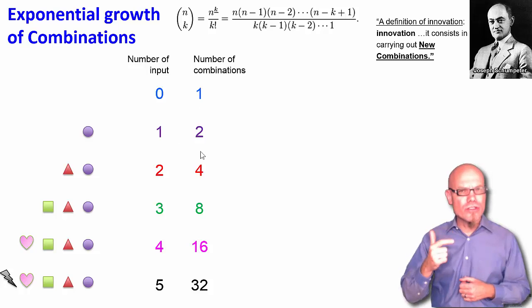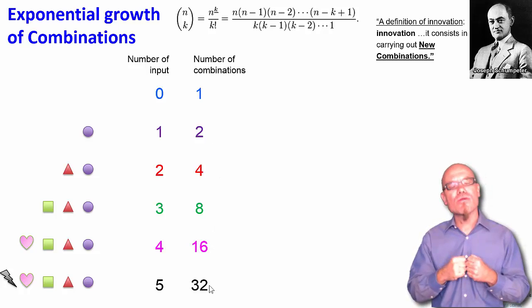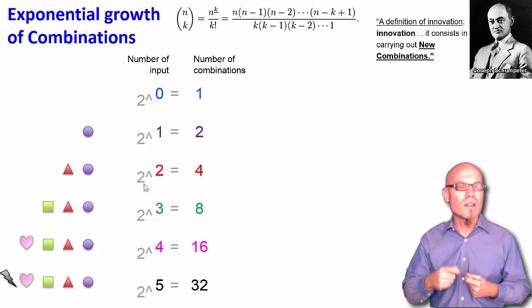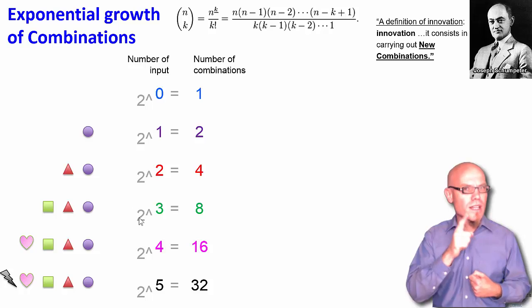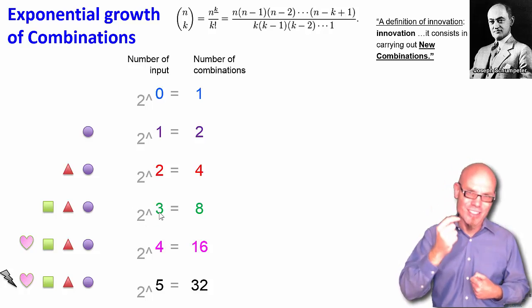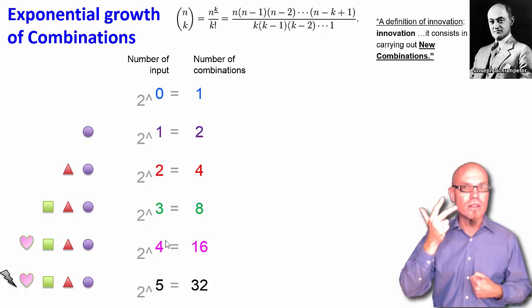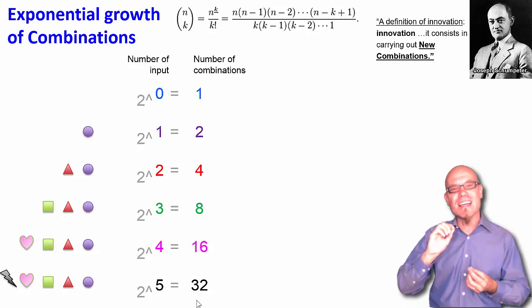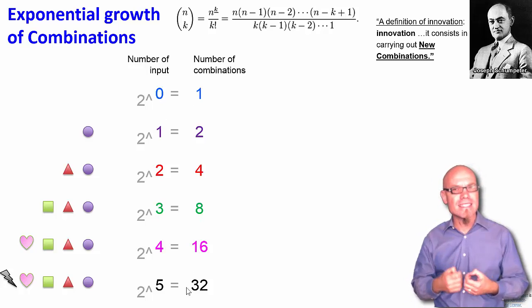Now this sequence of 1, 2, 4, 8, 16, 32 is called an exponential sequence because they are the result of exponentiation. So 2 to the 0 is 1, 2 to the 1 is 2, 2 to the power of 2, that means 2 times 2 is 4, 2 to the power of 3 means we have 2 times 2 times 2, three times 2 with itself is 8, 2 to the power of 4, 2 times 2 times 2 times 2 is 16, and 2 to the power of 5 is 32. So since this is in the exponent, we call this exponential growth: 1, 2, 4, 8, 16, 32.